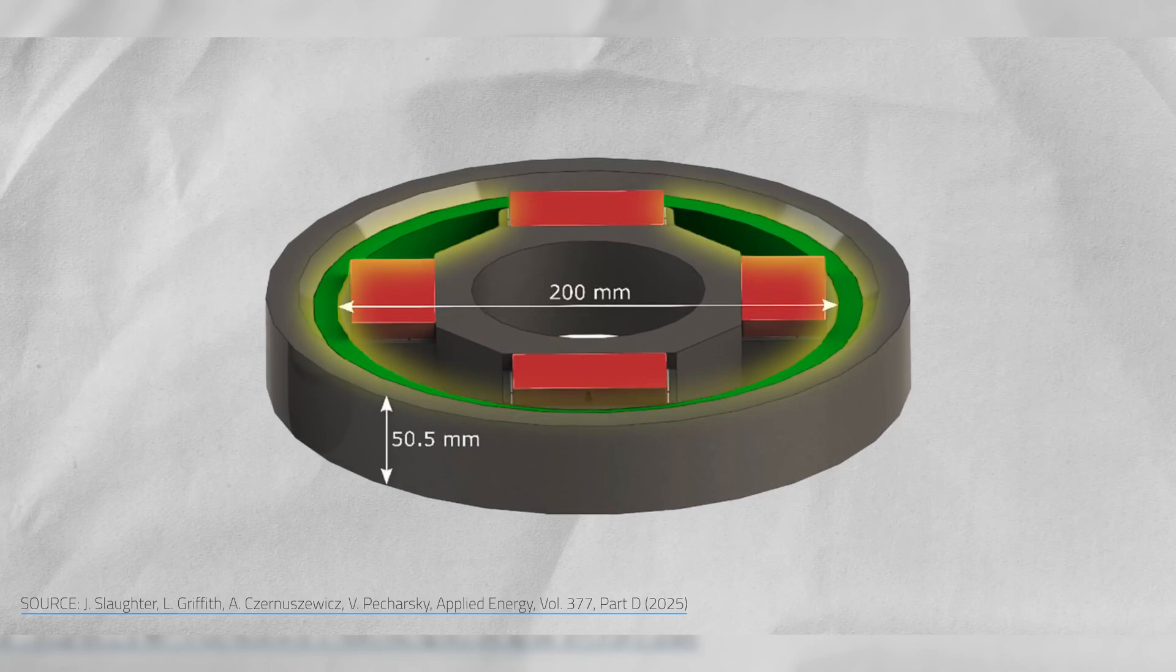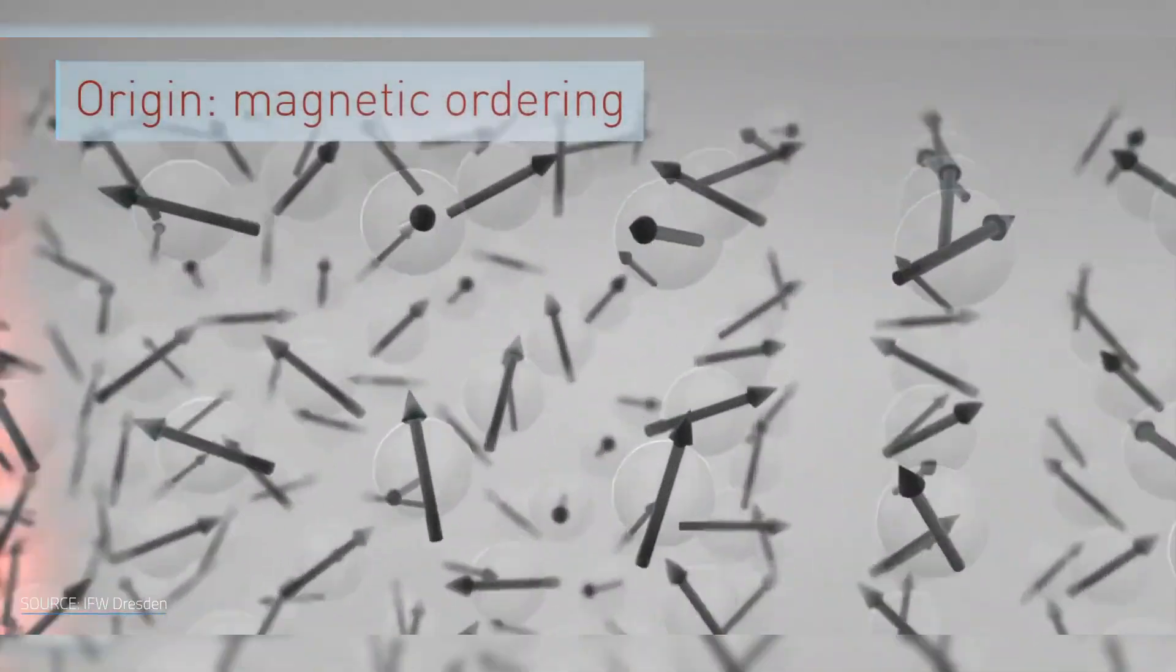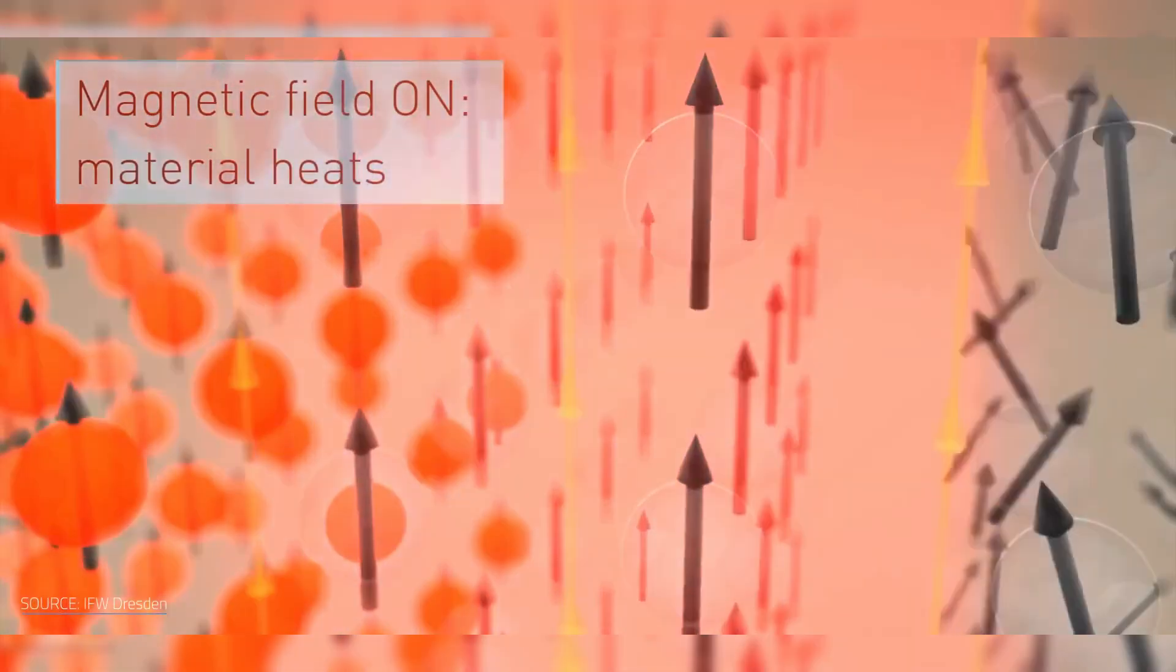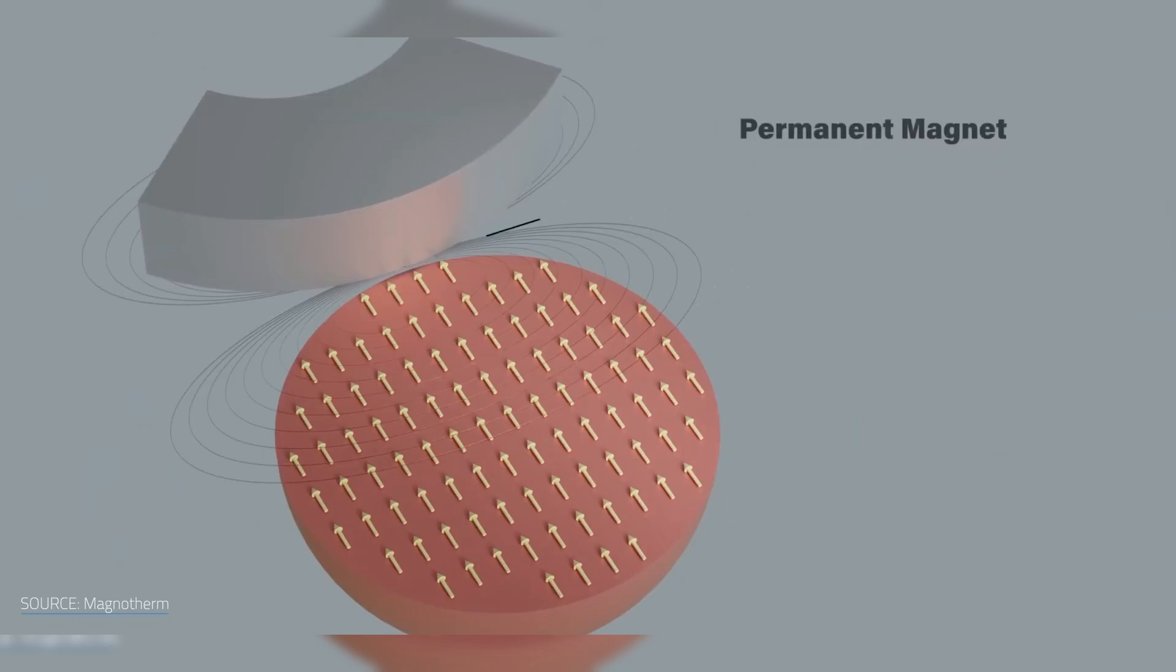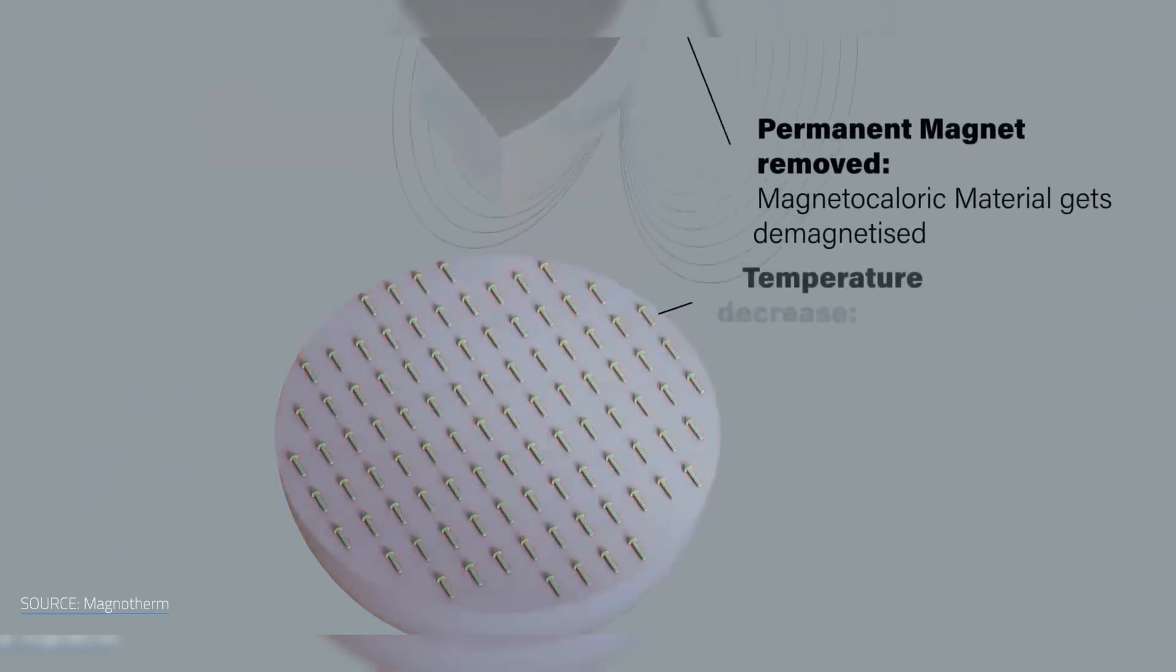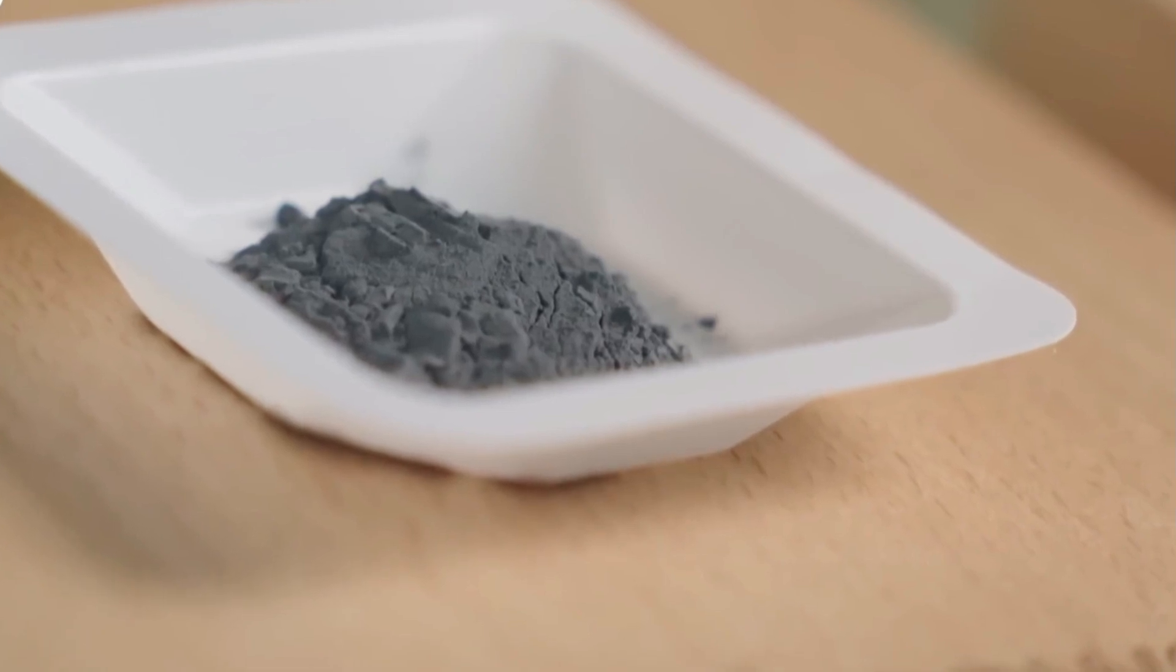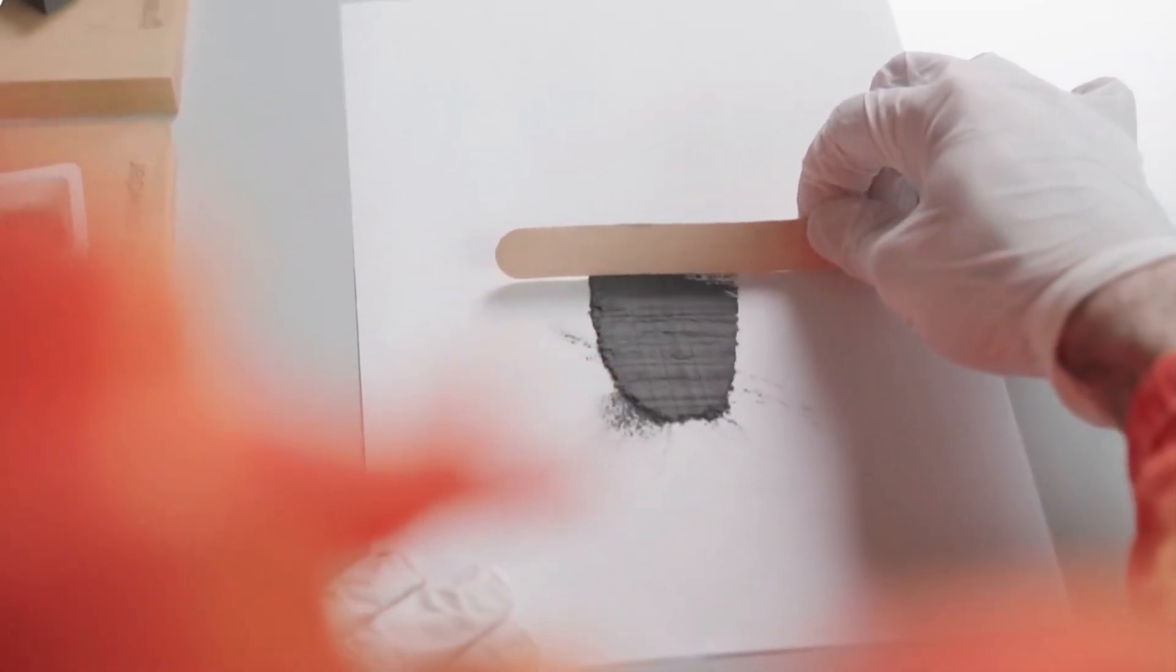The AMR contains nine beds filled with tiny gadolinium particles, each about the size of a fine coffee ground. When exposed to rotating magnets, these beds alternately heat up and cool down, transferring heat through a flowing liquid. But the real innovation came when the team swapped gadolinium with lanthanum iron silicon. Not only is it more cost effective, it also boosted the system power density. Basically, more cooling per kilogram of device.